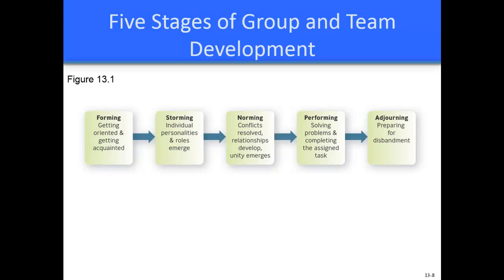In the fourth stage, performing, members concentrate on solving problems and completing assigned tasks. Leaders should give members the empowerment they need to complete those tasks. The fifth and final stage is adjourning, where members prepare for disbandment. The leader can help ease the transition by rituals celebrating the end and new beginnings, and highlight valuable lessons learned to prepare everyone for future group and team efforts as they move forward.